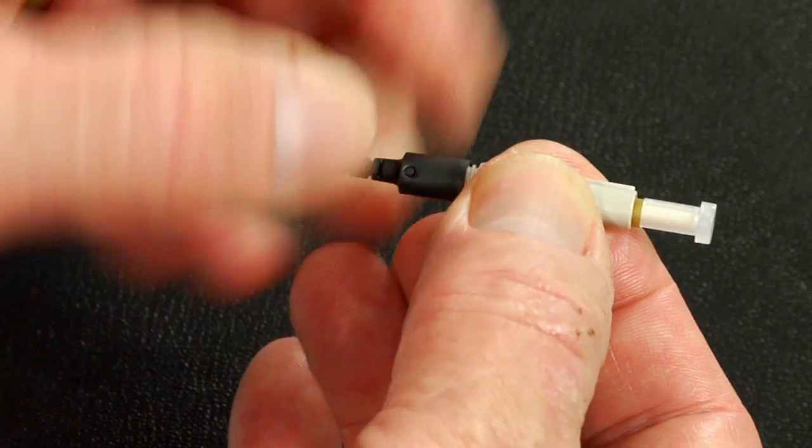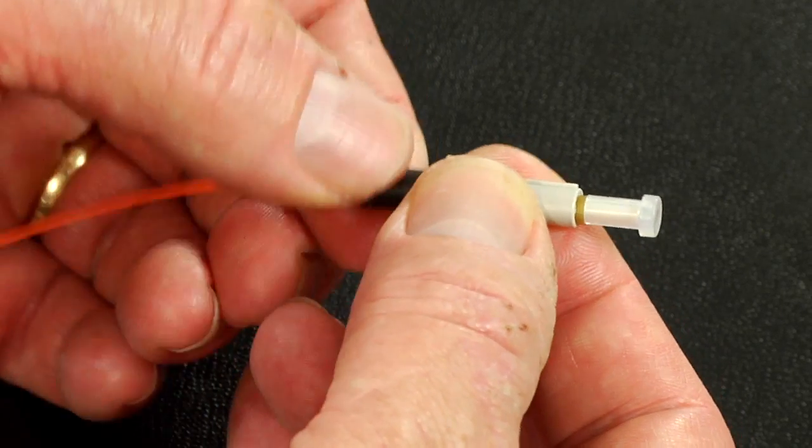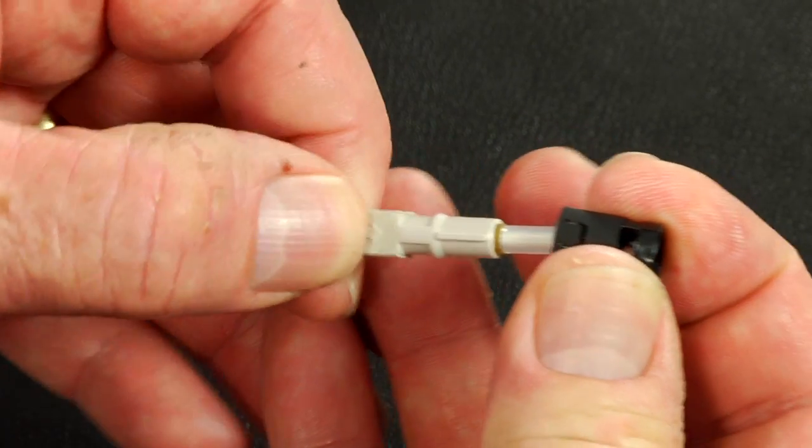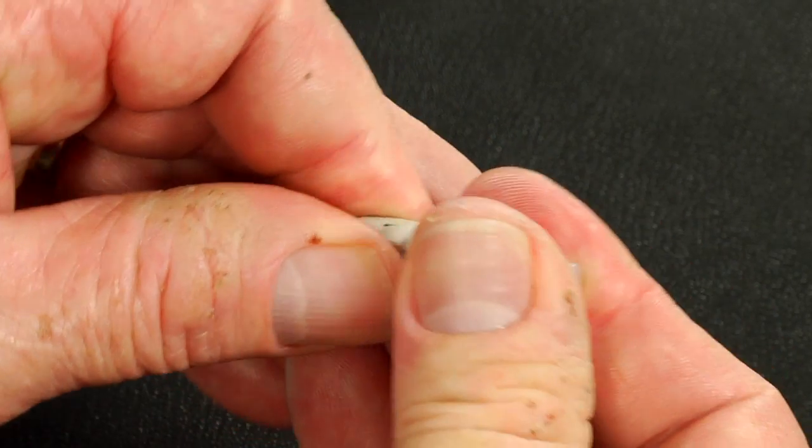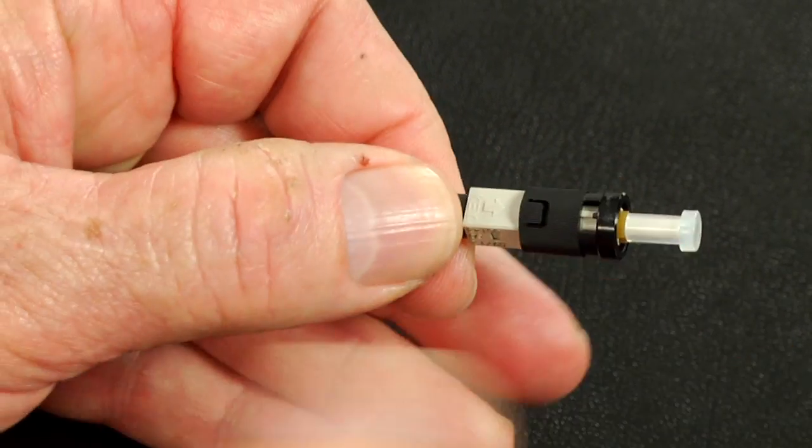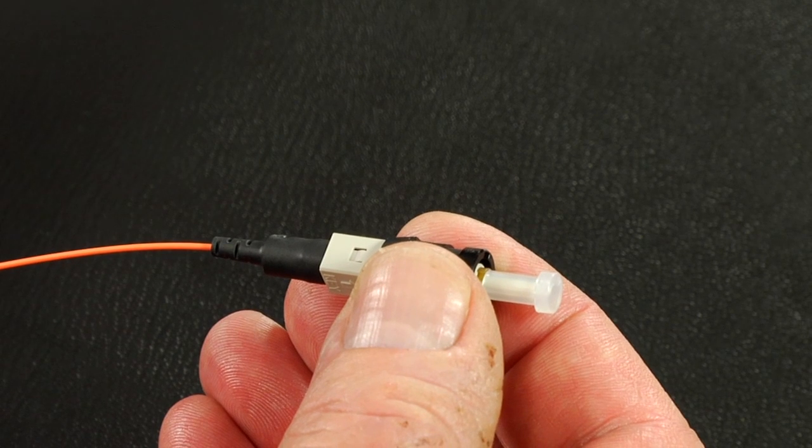Slide the 900 micron boot onto the connector. Install the ST housing onto the connector. Termination complete.